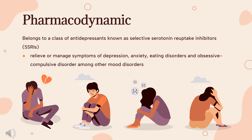Serotonergic abnormalities have been reported in patients with mood disorders. Behavioral and neuropsychological effects of serotonin include the regulation of mood, perception, reward, anger, emotion, appetite, memory, sexuality, and attention. The onset of action for depression is approximately 1–4 weeks. The complete response may take 8–12 weeks after initiation of citalopram.